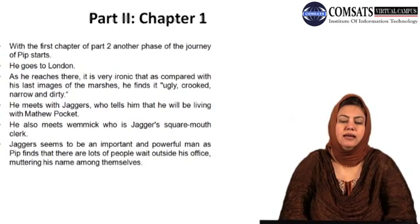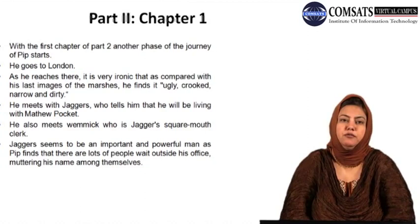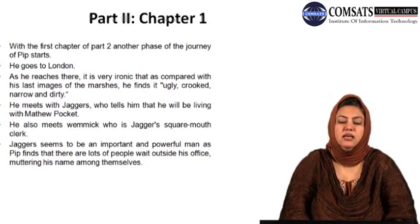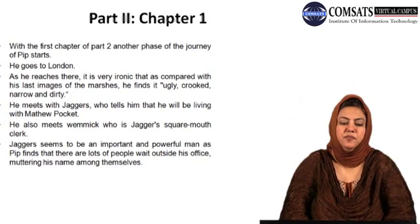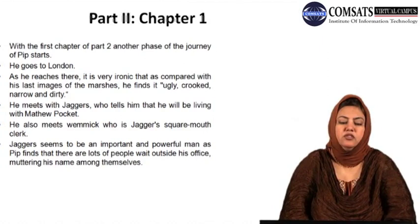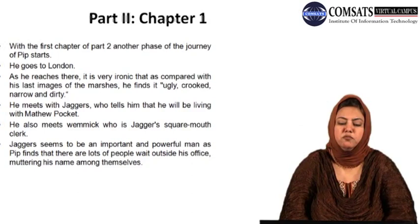Starting Part Two, Chapter One, another phase of Pip's journey begins as he goes to London. It is very ironic that compared with his last images of the marshes, he finds London ugly, crooked, narrow, and dirty. He meets Jaggers, who tells him he will be living with Matthew Pocket. He also meets Wemmick, who is Jaggers's square-mouthed clerk. Jaggers seems to be an important and powerful man, with many people waiting outside his office muttering his name.